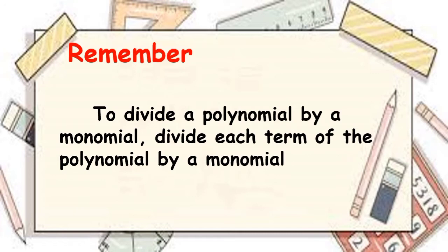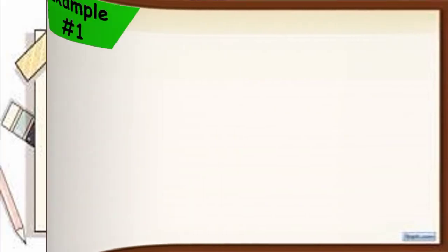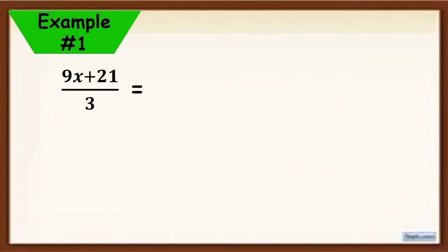To understand it further, let's have an example. We have 9x plus 21 all over 3, or divided by 3.